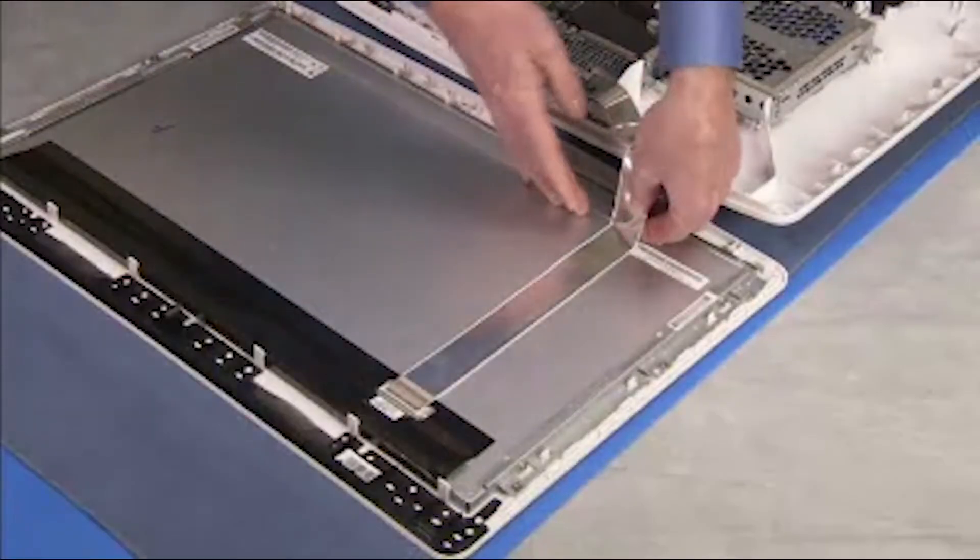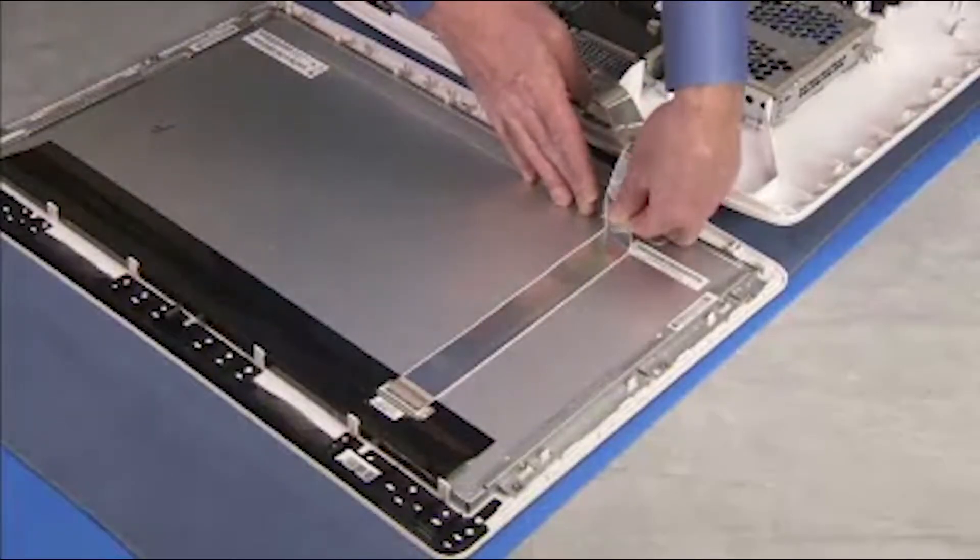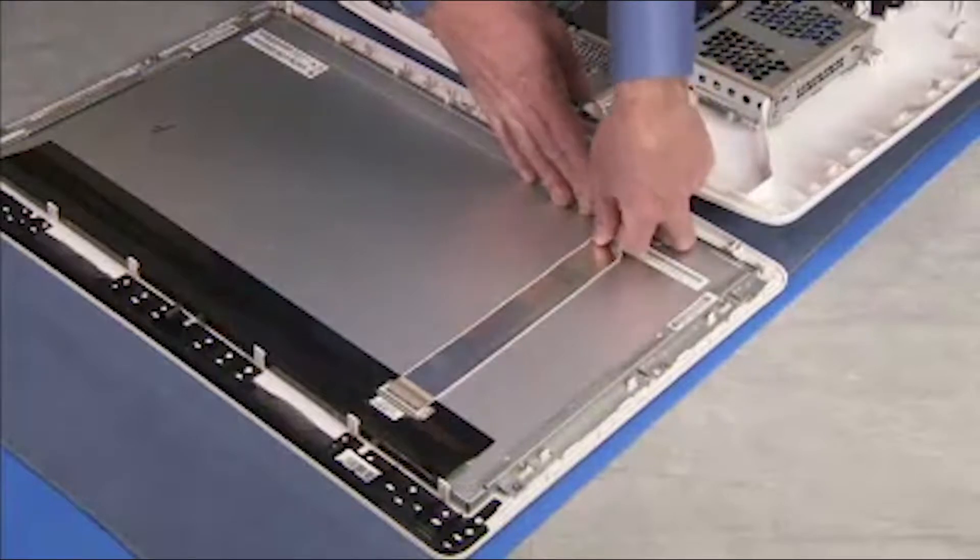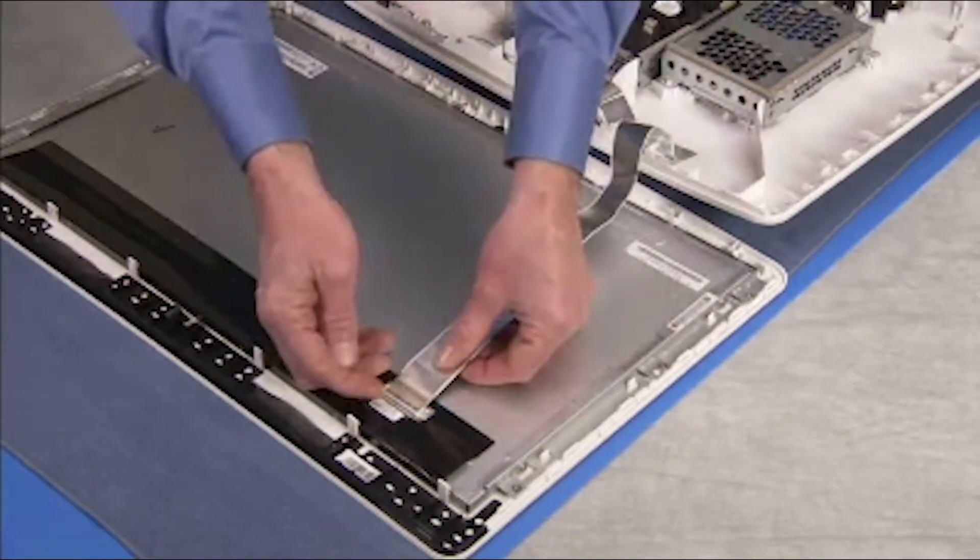Pry off the LVDS adhesive for the cable on the panel. Untape the connector header and detach the LVDS cable from the panel.